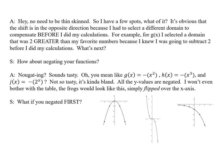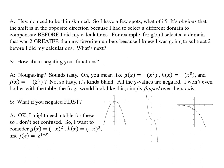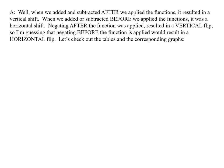What if you negated first? Okay. I might need a table for those so I don't get confused. So I want to consider g(x) = (-x)², h(x) = (-x)³, and j(x) = 2^(-x). Perhaps you could predict what will happen. Well, when we added and subtracted after we applied the function, it resulted in a vertical shift. When we added or subtracted before we applied the functions, it was a horizontal shift. Negating after the function was applied resulted in a vertical flip. So I'm guessing the negating before the functions applied would result in a horizontal flip. Let's check out the tables in the corresponding graphs. And again, you can do this yourself ahead of time.